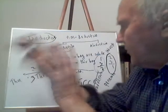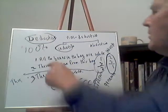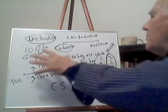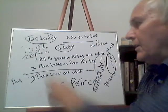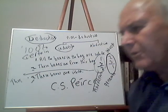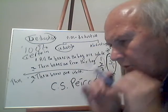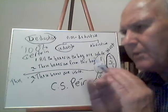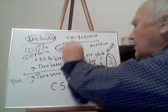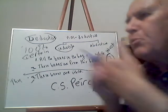Deductive arguments give you 100% certainty. The argument — all the beans in the bag are white, these beans are from this bag, therefore these beans are white — if both premises are true, the conclusion has to be true absolutely. In non-deductive arguments — inductive and abductive — you're never going to get absolute certainty; at best you get probably true.